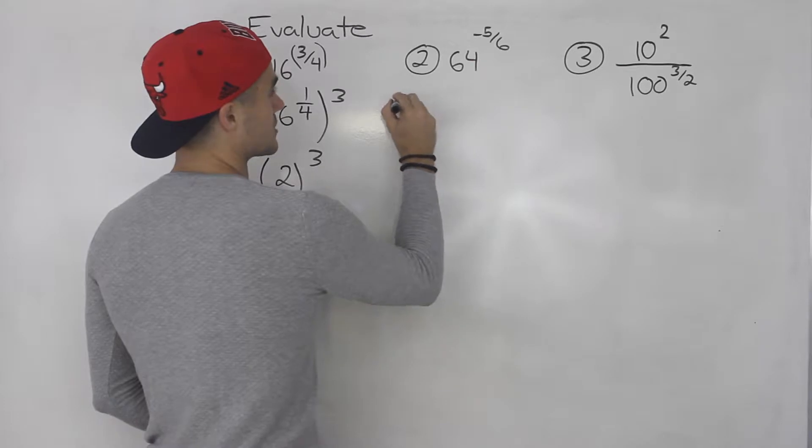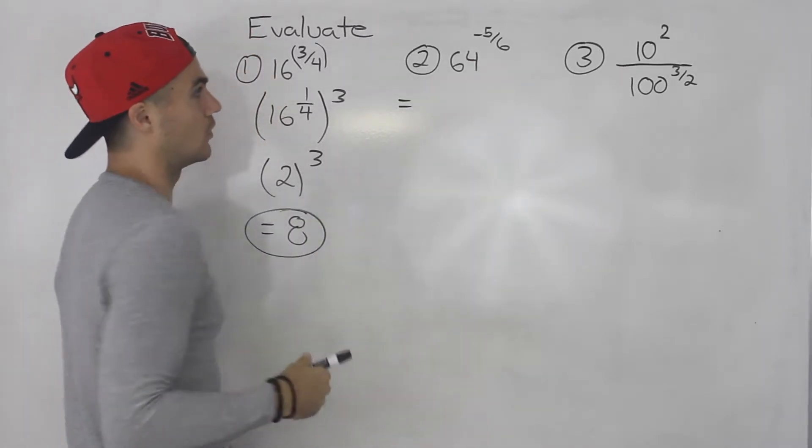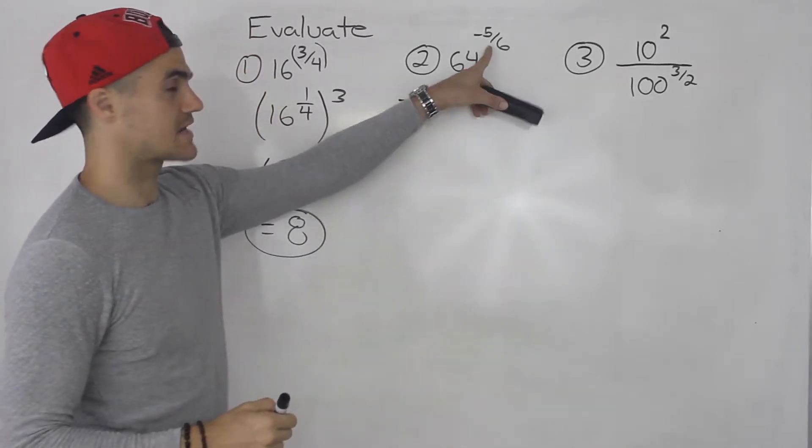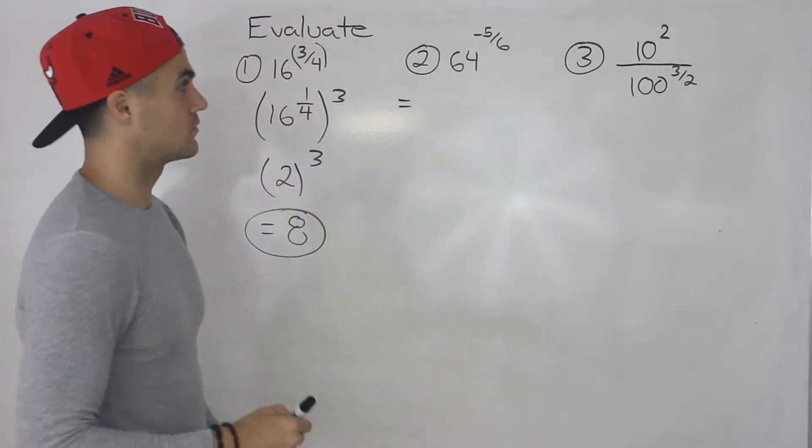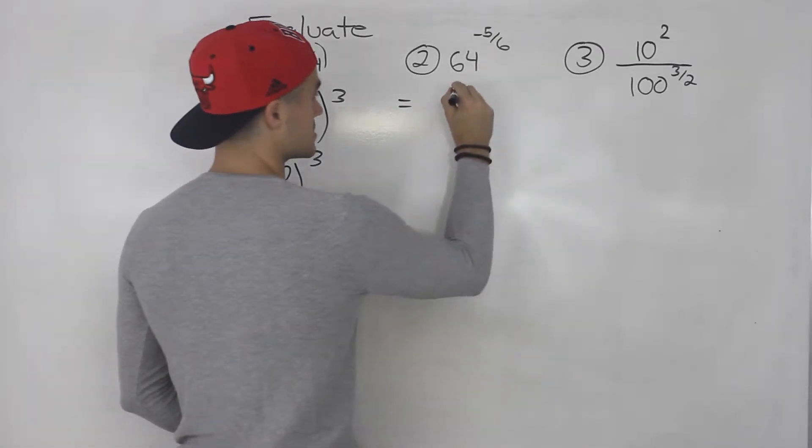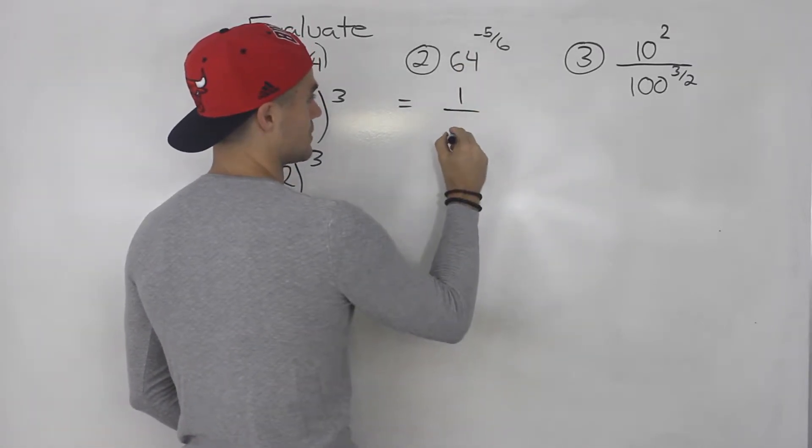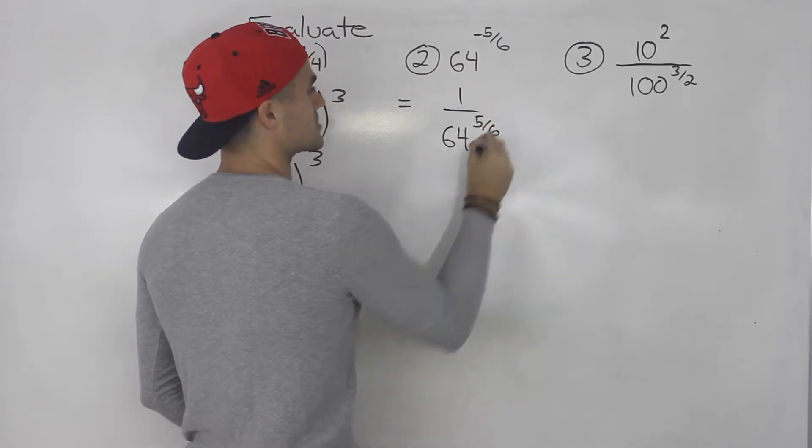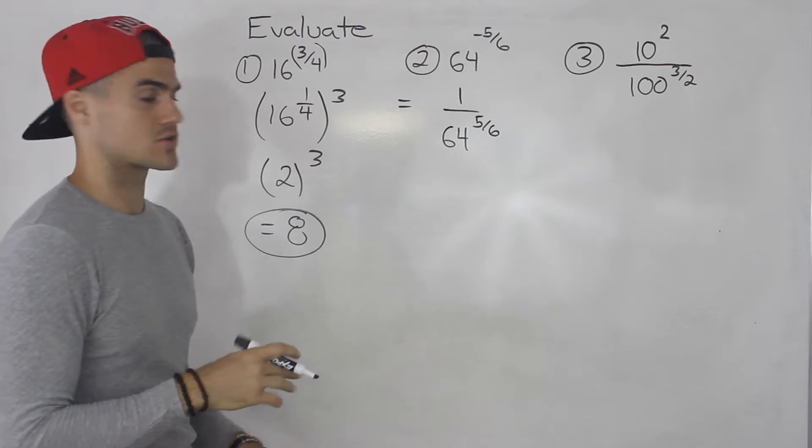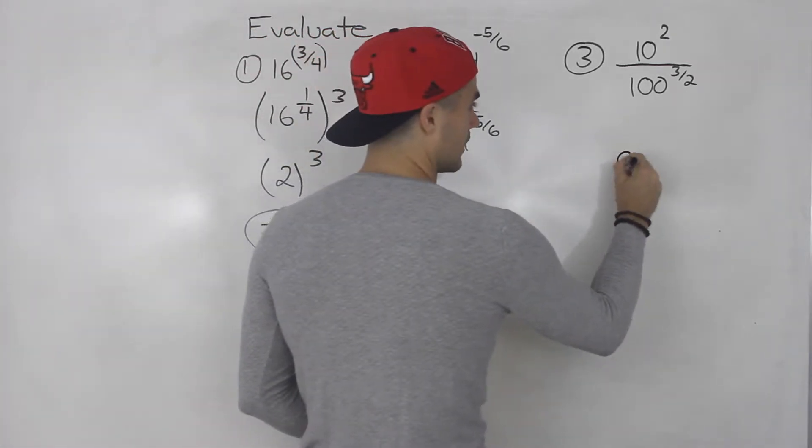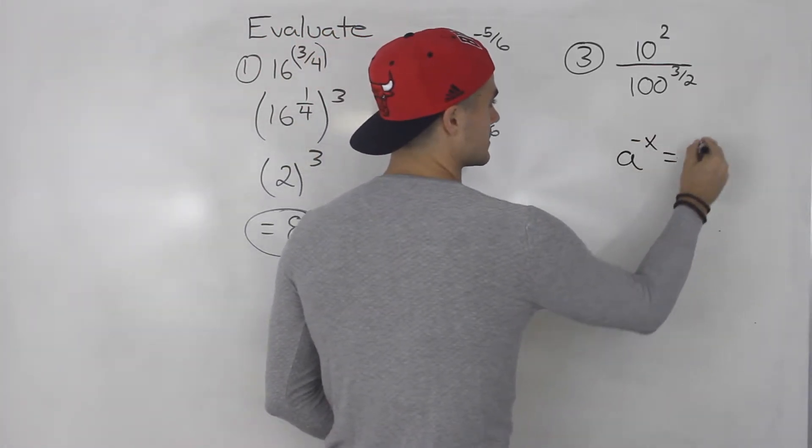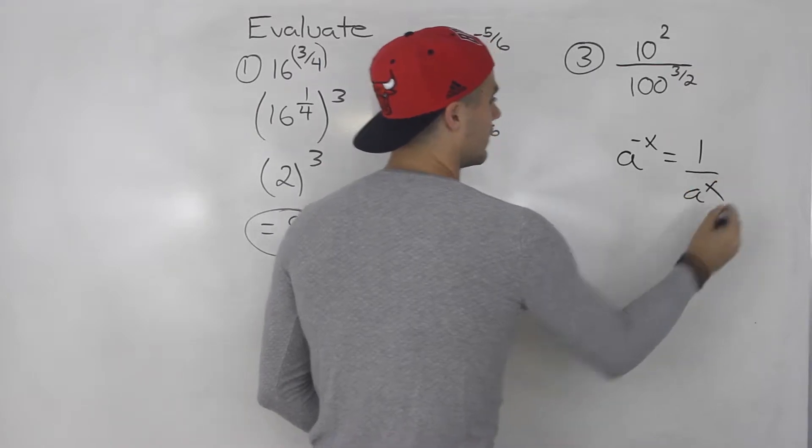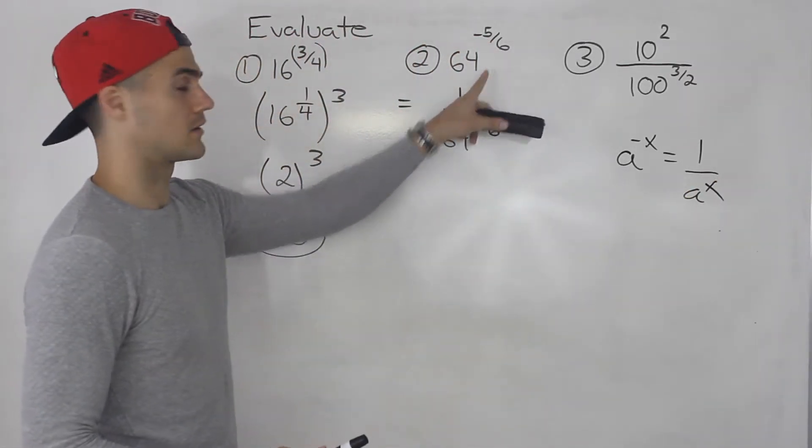Number two: we got 64 to the power of negative 5 over 6. Now this is a negative exponent, so we got to use exponent laws to bring that down to the denominator, and then that exponent becomes positive. If you remember, a to the negative x equals 1 over a to the x. So that's all we did here.